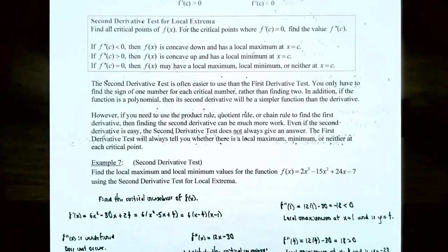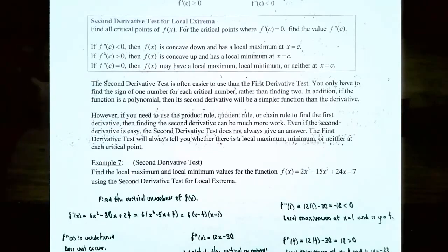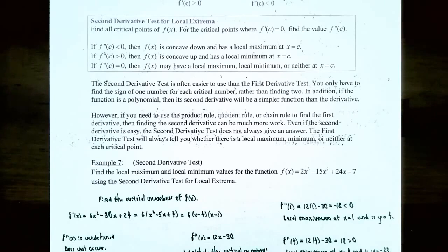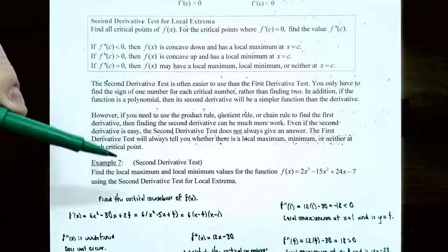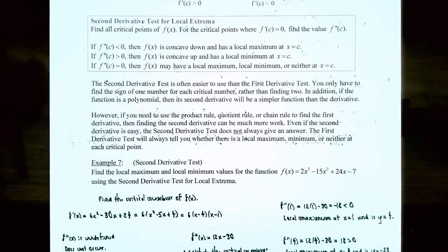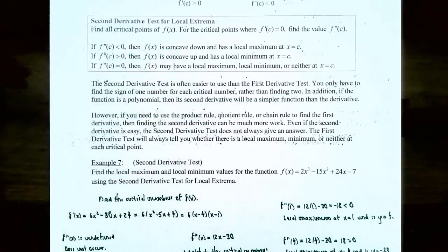Why use the second derivative test instead of the first? The second derivative test is often easier — you only plug in one number (the critical number) into the second derivative and check its sign, rather than choosing test values on both sides. However, if finding the second derivative requires the product rule, quotient rule, or chain rule, it may create more work. And when f''(c) = 0, the test is inconclusive, so you may need to fall back on the first derivative test.